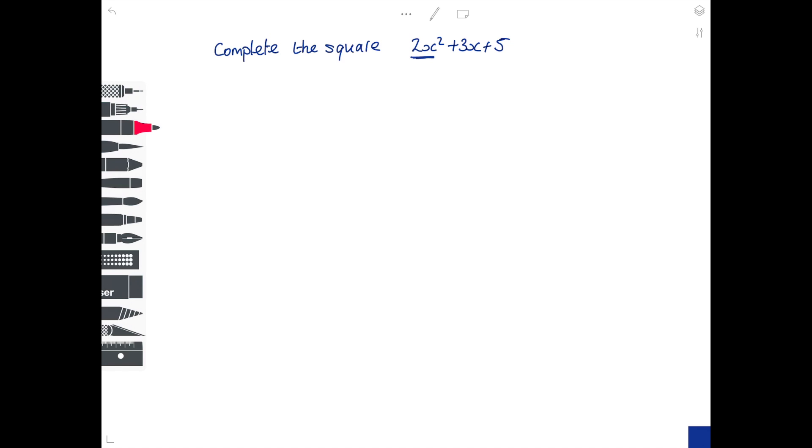Notice it's one of the trickier ones because we've got two lots of x squared, not just one. So I'm going to start with 2x squared plus 3x plus 5, and I have to take out a common factor of 2 because I need to have the coefficient of x squared equal to 1. So I'm going to divide everything by 2, so it's x squared plus 3 over 2x plus 5 over 2.